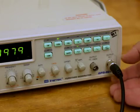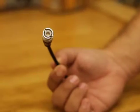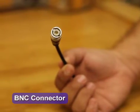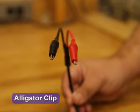The output of the function generator is connected to the circuit or equipment using cables. Typically, a BNC connector is used at one end and alligator clips at the other end for easy connection to a circuit.